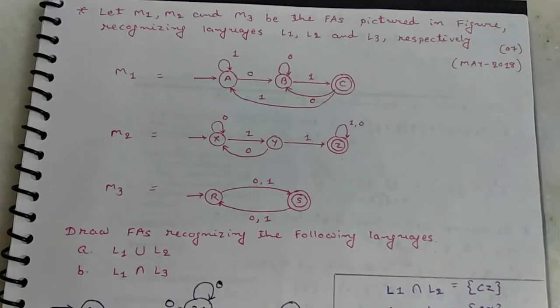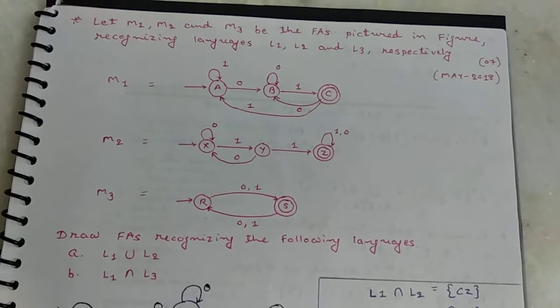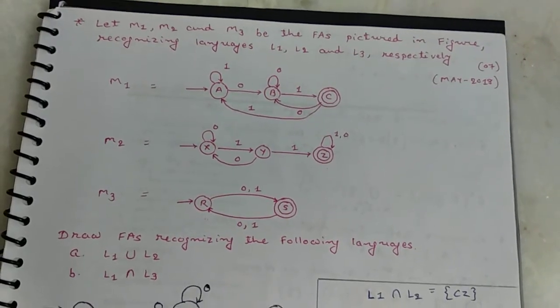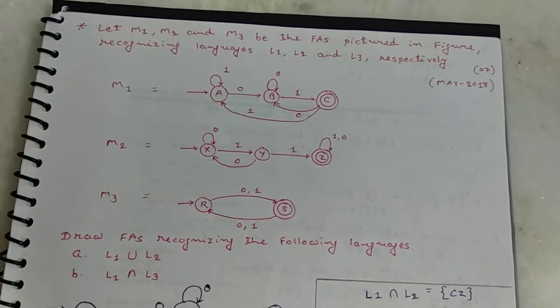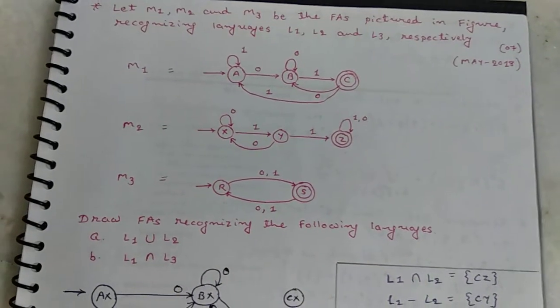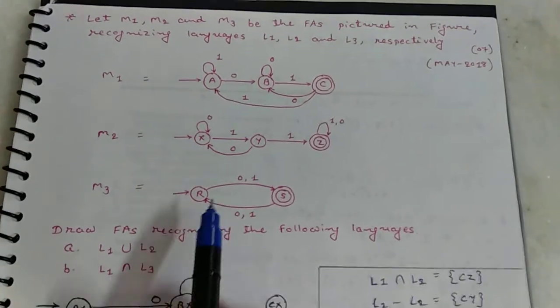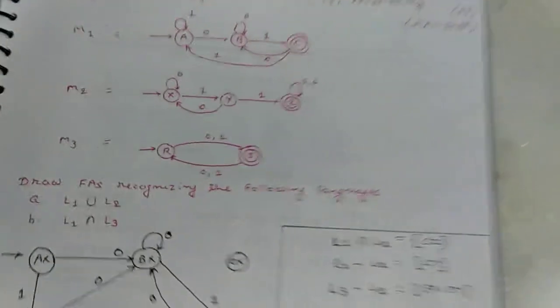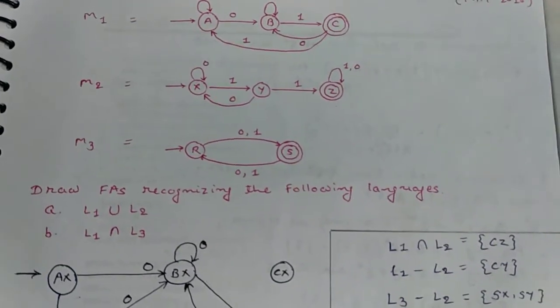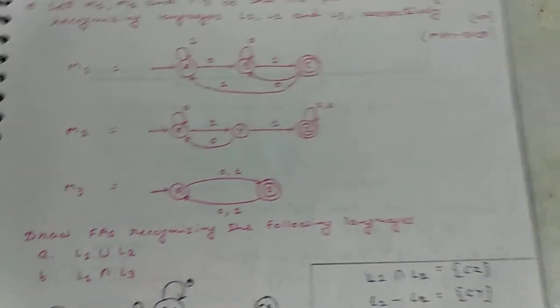Let M1, M2 and M3 be the finite automatas pictured in the figure recognizing languages L1, L2 and L3 respectively. Here 3 automatas are given, draw FAs recognizing the following languages. First one, L1 union L2 and L1 intersect L3.